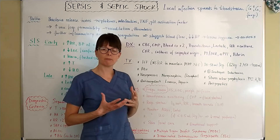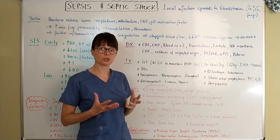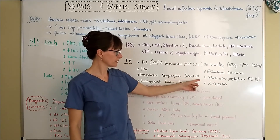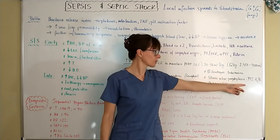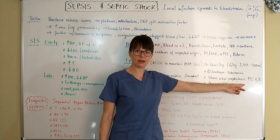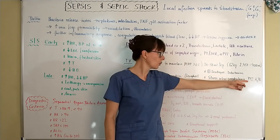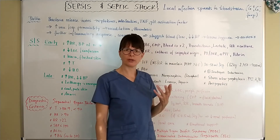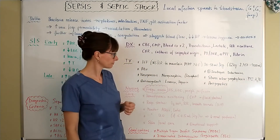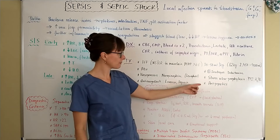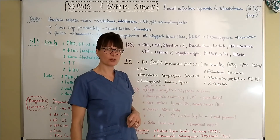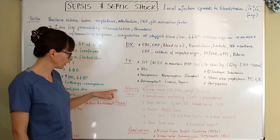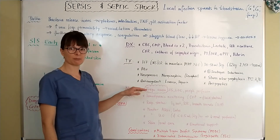Because sepsis is a major offense to the patient's body, we also need to prevent stress ulcers through administration of PPIs such as Protonix, or H2 blockers such as famotidine or ranitidine. Antipyretics are given if the patient has a fever.